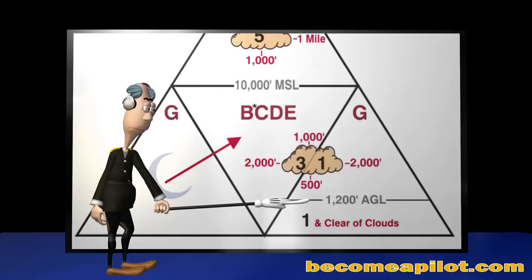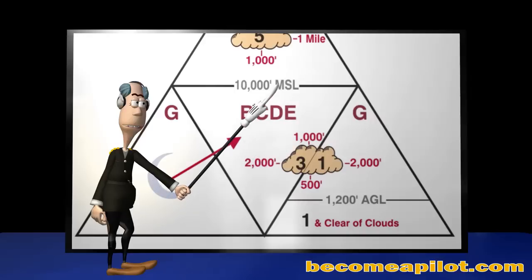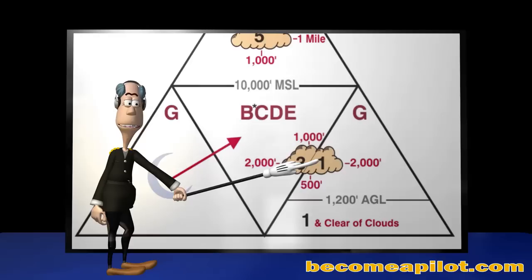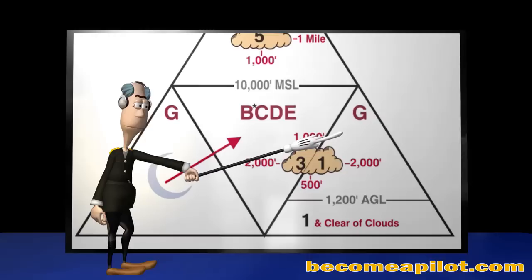More than 1,200 feet above ground level, but less than 10,000 feet MSL, you are required to maintain 1,000 feet above, 2,000 feet to the side, and 500 feet below any cloud formation. And this is the same cloud clearance requirement found in the middle inverted pyramid. The number 1, located on the right side of the bisected cloud, is the required flight visibility in this area.